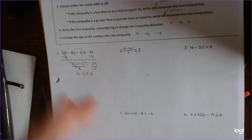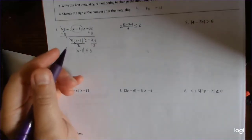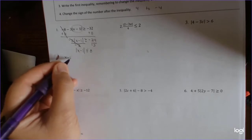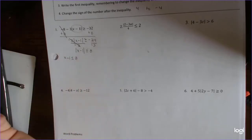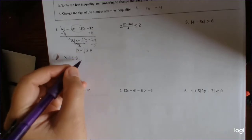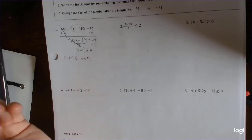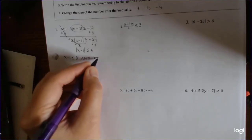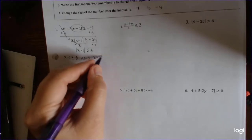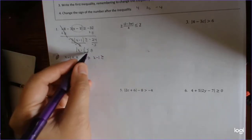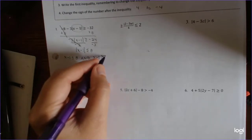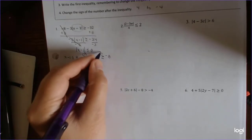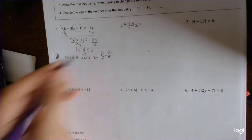Now that the absolute value is isolated, you analyze it. The inside might be less than or equal to 8, so you just write it down without the absolute value. Since it's a less than, it's going to be an 'and.' Then for the second inequality, you're analyzing x minus 1 outside the absolute value — it also might be greater than, so you change the sign and write negative 8. There are three things to remember: the word, change the inequality direction, and change the sign of the number.